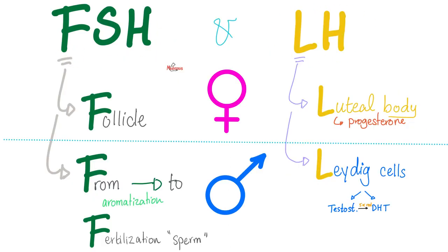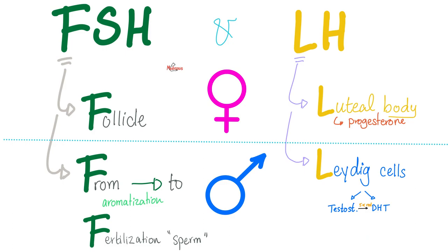FSH stands for Follicle Stimulating Hormone; LH stands for Luteinizing Hormone. They are named based on their function in females, not males. In females, FSH stimulates the follicle and LH makes the luteal body. In males, FSH is responsible for aromatization — converting male hormones to female hormones — and also stimulates the Sertoli cell, which nourishes the sperm. LH in males stimulates the Leydig cells, which secrete testosterone and the more potent dihydrotestosterone.